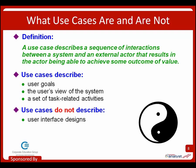Some things use cases don't do: they don't describe user interface designs, technology solutions, infrastructure, or application architecture. I don't even like to put implementation language in a use case like 'click on OK' — I'd rather say 'user submits the data,' because there are many ways to submit data these days: by voice, touch, click, or other options. User stories are kind of like use cases, but not nearly as detailed. You can document use cases at varying levels of detail — some high level with broad strokes, others more highly detailed — whatever is necessary to clearly communicate the necessary information to users, developers, and testers.